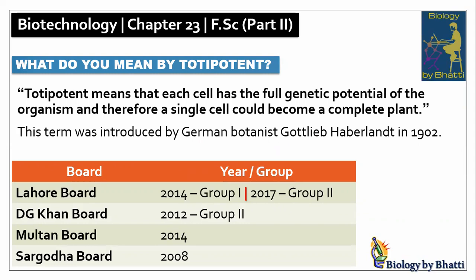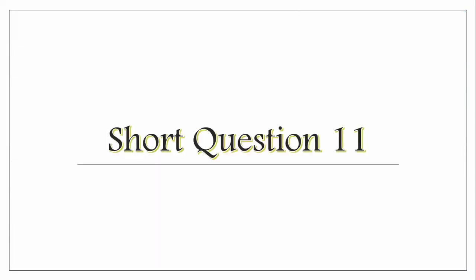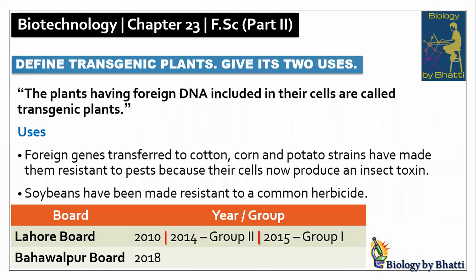Short question number ten: What do you mean by totipotency? Past paper references: Lahore board 2014 group 1, 2017 group 2; DJ Khan board 2012 group 2; Multan board 2014; Sargoda board 2008. Regarding transgenic plants, foreign genes are transferred to cotton, corn, and potato to produce pest-resistant varieties. Likewise, soybeans have been made resistant to common herbicides. Past paper references for this topic: Lahore board 2010, 2014 group 2, 2015 group 1; Bahawalpur board 2018.